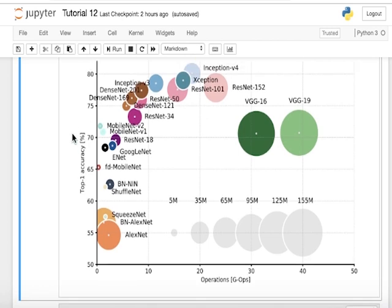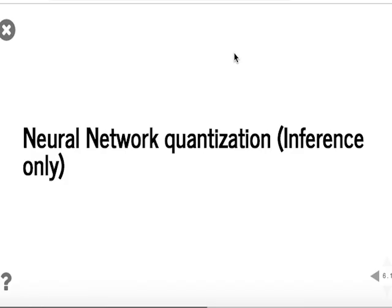DenseNet and other interesting architectures use many 1x1 filters and bottlenecks. These architectures have fewer parameters and achieve better accuracy while being deeper. Now let's start talking about neural network quantization — specifically quantization at inference phase.